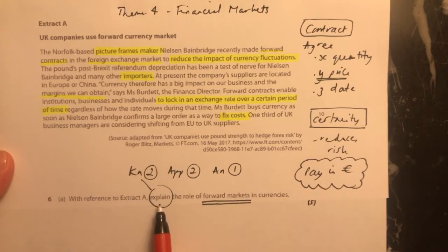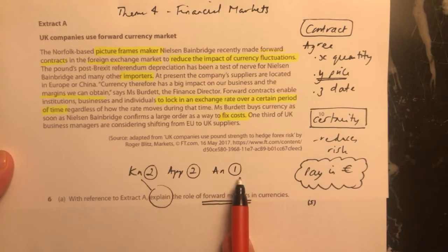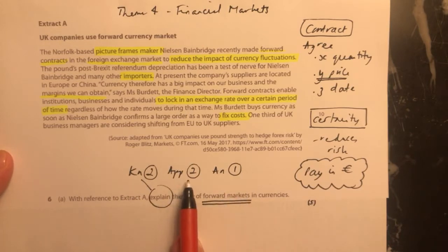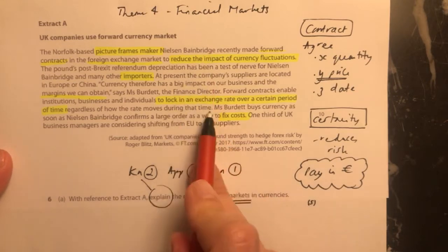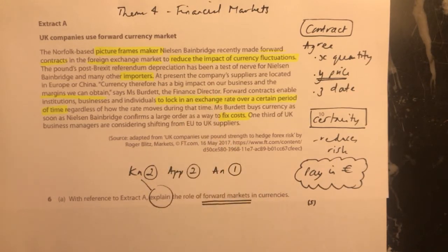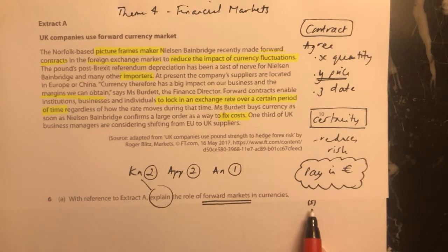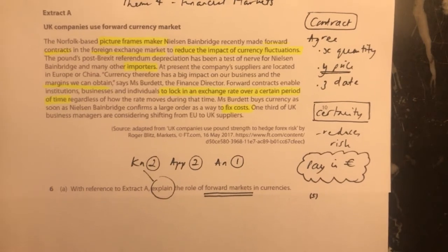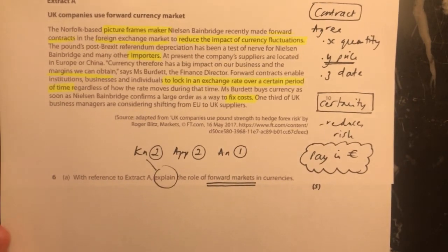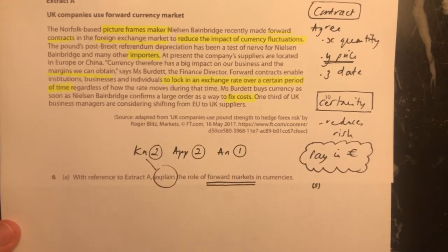Because it says 'explain' we need to make sure we're getting two marks for knowledge, two for application, and one for analysis. Remember, application can be an example of something and/or it can be referring to the data that you've been given here. You need to understand what a forward market is to answer the question - that will be where you're showing your knowledge - and altogether there are five marks available. I'm going to write an answer to the question and then link it in with the extract that we've been given.